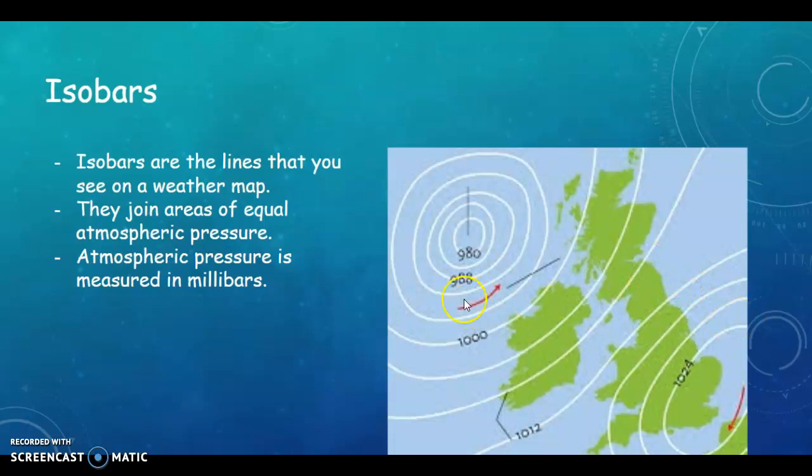So what we have here is 980 millibars at the centre of this low. And why am I saying it's a low? Because as you go away from it, the measure of atmospheric pressure is getting higher. And here we have a high of 1024 millibars. And how do I know it's a high? Because as you move away from it in lines of atmospheric pressure, it is getting lower. So high down here, low up here.